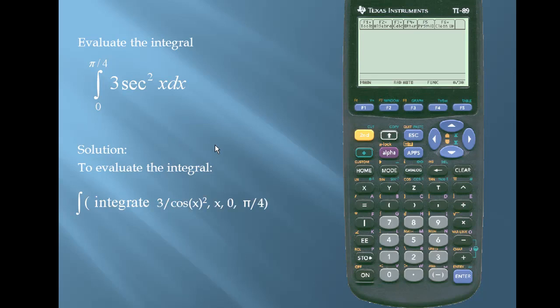For the TI-89 solution, we'll use the integrate function. We'll put in our expression. And if you remember from trigonometry, the secant squared is equal to 1 over the cosine squared. So we'll enter in our function as 3 divided by the cosine of x squared. Our variable is x. The lower limit is 0. The upper limit is pi over 4.